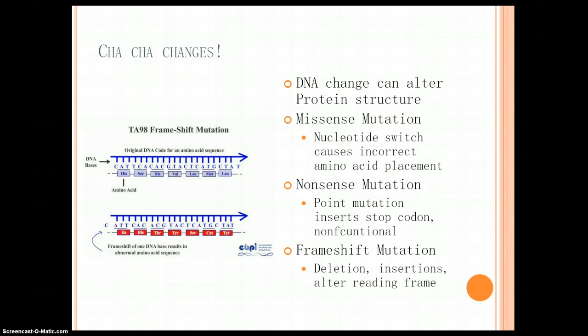We also have what are called frameshift mutations. Now, frameshift mutations tend to happen mostly when things are damaged or changed on the chromosomal level during crossing over, non-disjunction during meiosis. So, what happens here is, you can see up top, you've got this amino acid sequence: histidine, serine, histidine, valine, leucine, methionine, leucine, right? Now, what you'll see is, it's CAT, that's where the reading frame begins.